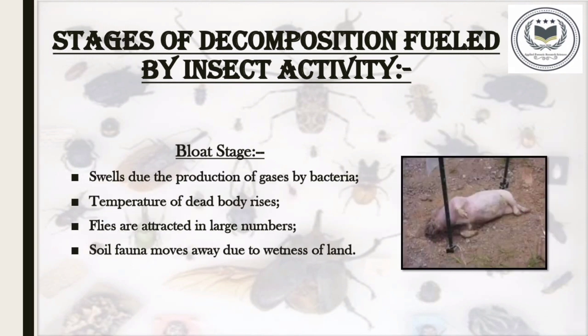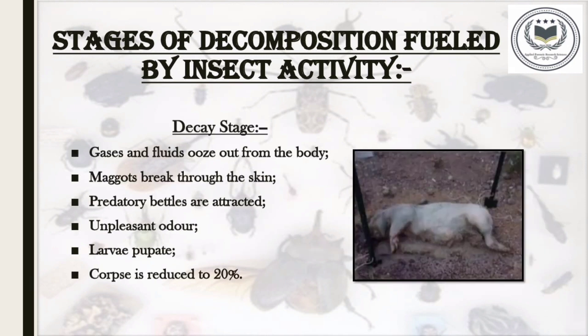The second stage is the bloat stage. The body swells due to gases produced by bacteria and the temperature of the corpse rises. Flies are still present; adult and larval blowflies are attracted in large numbers to seepage, and soil fauna moves away due to the wetness of the earth. Ants and other species of flies prey on maggots. The third is the decay stage: gases subside, decomposition fluids seep from the body, bacteria and maggots break through the skin. Predatory beetles such as rove and hister beetles are attracted. There is an unpleasant odour, larvae begin to pupate, and the corpse is reduced to about 20% of its original mass.